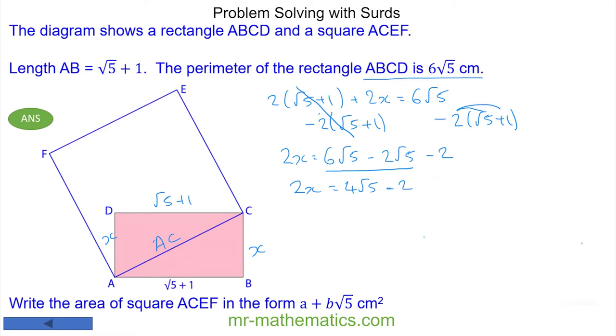I can factorize the right hand side by taking out the common factor of 2, which gives 2(2√5 - 1). I can divide both sides by 2, so x equals 2√5 - 1.